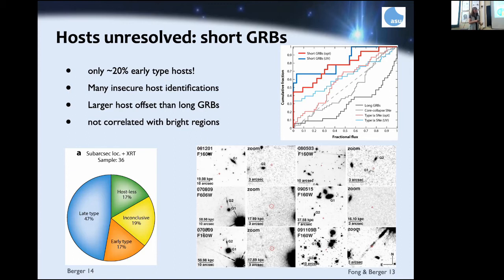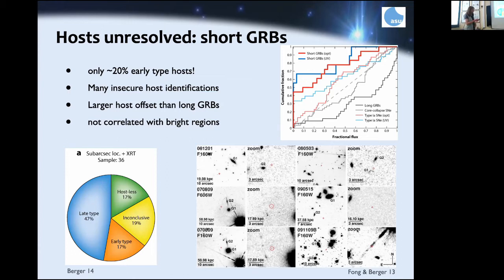Some short GRBs cannot be identified with a host at all. When two compact objects coalesce, both neutron stars must have previously undergone a supernova, and the system can get kicked out of the galaxy. Where the coalescence actually occurs might be far from any galaxy, and without a redshift — currently known for only three or four short GRBs — you cannot identify the host with certainty. Short GRBs are also found at much larger offsets from their host galaxies.